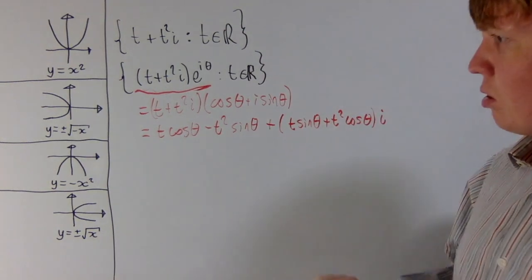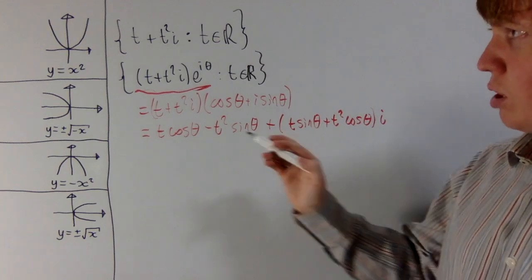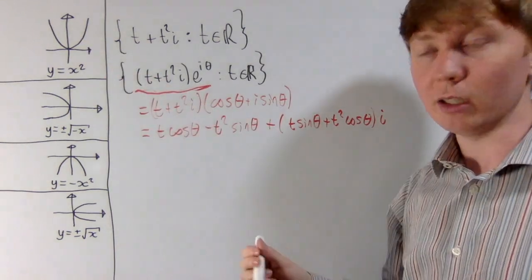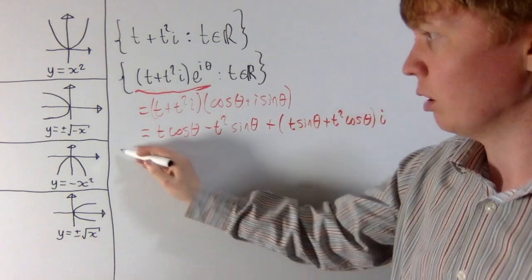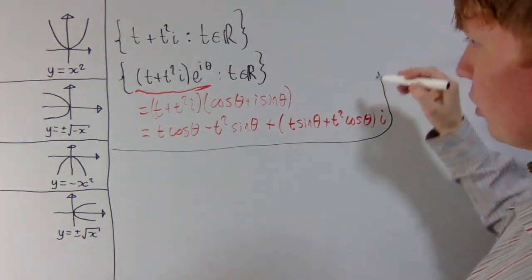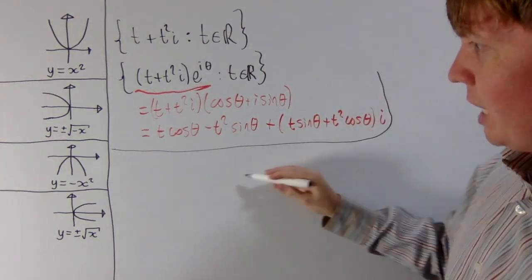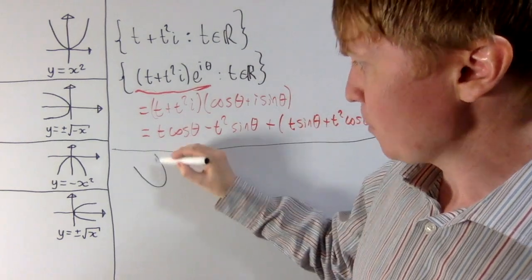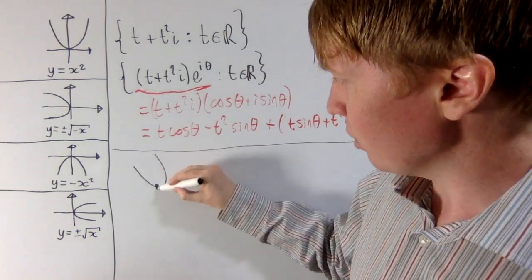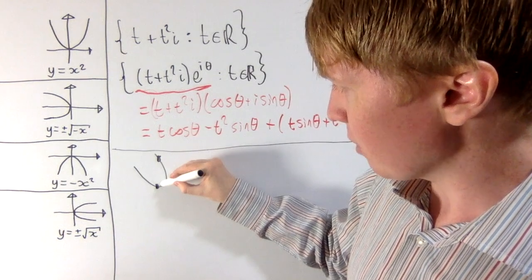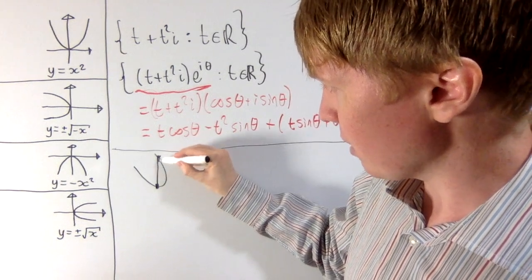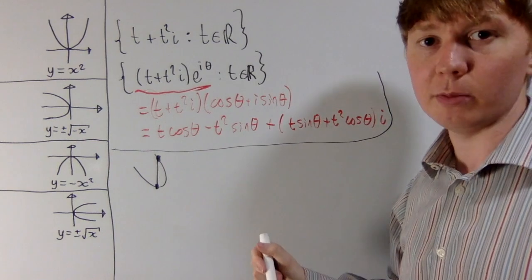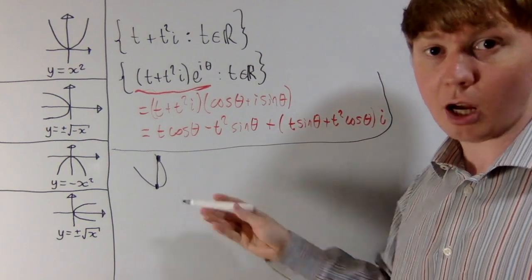To solve when our rotated graph is a well-defined function, we look for one-to-many behaviour: one x value with two potential outputs. If we can find such points for a given theta, we can prove that rotation doesn't give a well-defined function.